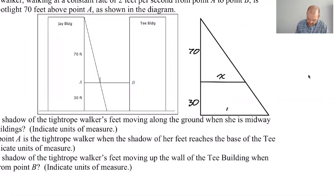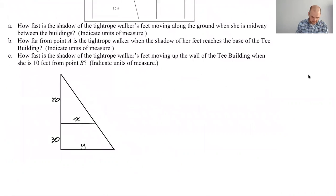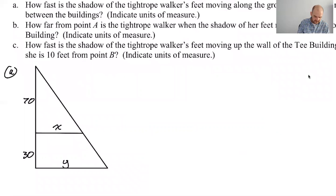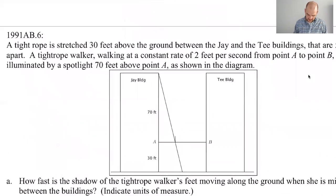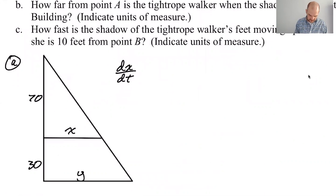So 70, 30. Now I don't want this to say 25, so I'm going to call this x, and I'm going to call this y. So this is question a. We were told in the problem that she is walking, so dx/dt, she is walking two feet per second, so dx/dt is positive two because it's getting longer over time, and we're trying to find dy/dt.